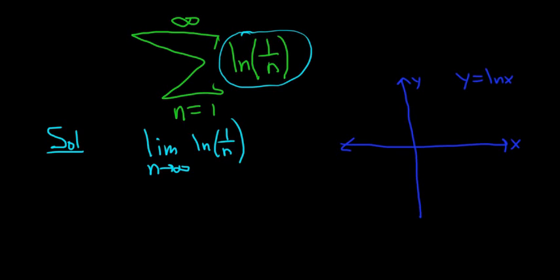So y equals ln x has a vertical asymptote at zero. And then it passes through one and it looks like this.